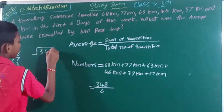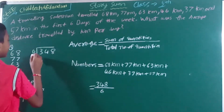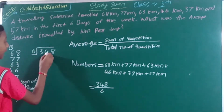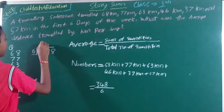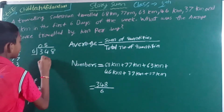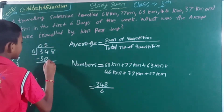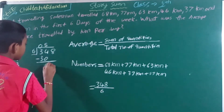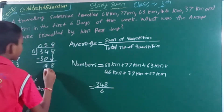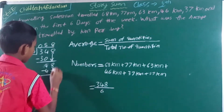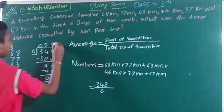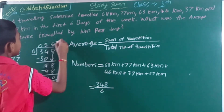Then 348 divided by 6. 6 is bigger than 3, so we take another digit, making it 34. 6 goes into 34 five times. Then 4 minus 0 is 4. Then 8 comes down, making 48. 6 goes into 48 eight times. 8 minus 8 is 0, and 4 minus 4 is 0. So the average is 58.